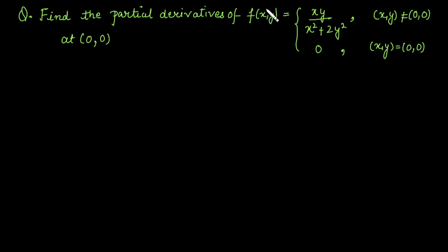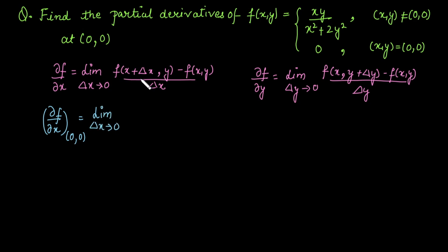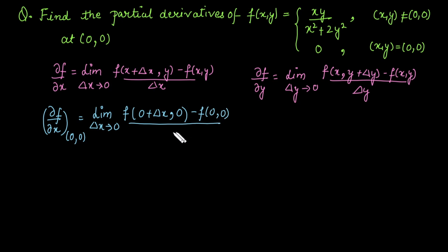In this case, to find the partial derivative of the function at the origin, we use the definition form of partial derivative. The partial derivative of a function with respect to x is defined by this form, and the partial derivative of the function with respect to y is defined by this form. We need to calculate the partial derivative at the point (0, 0), so instead of x we substitute 0, and y is replaced by the point 0.